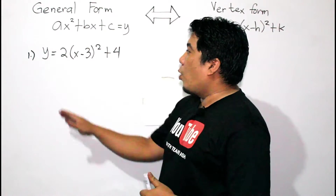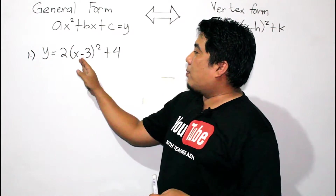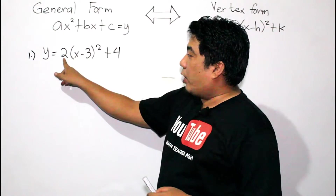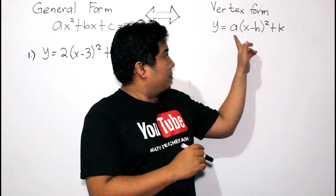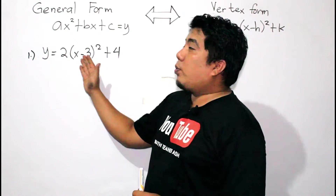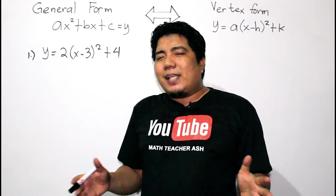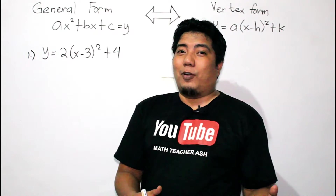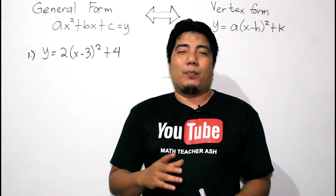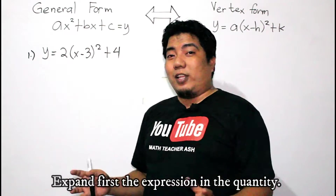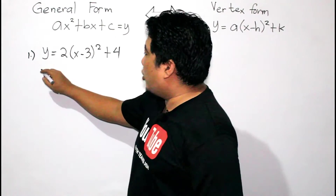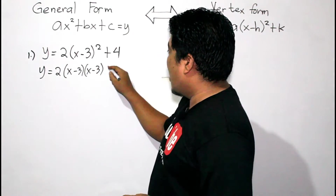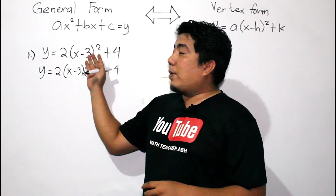We have here our first example: Y equals 2 times the quantity X minus 3 squared plus 4. This is a vertex form because we have our A, our H, and our K. What we will do here is transform it to general form. It is very easy to transform vertex form to general form. First, you expand your expression in the quantity, giving us 2 times (X minus 3) times (X minus 3) plus 4.